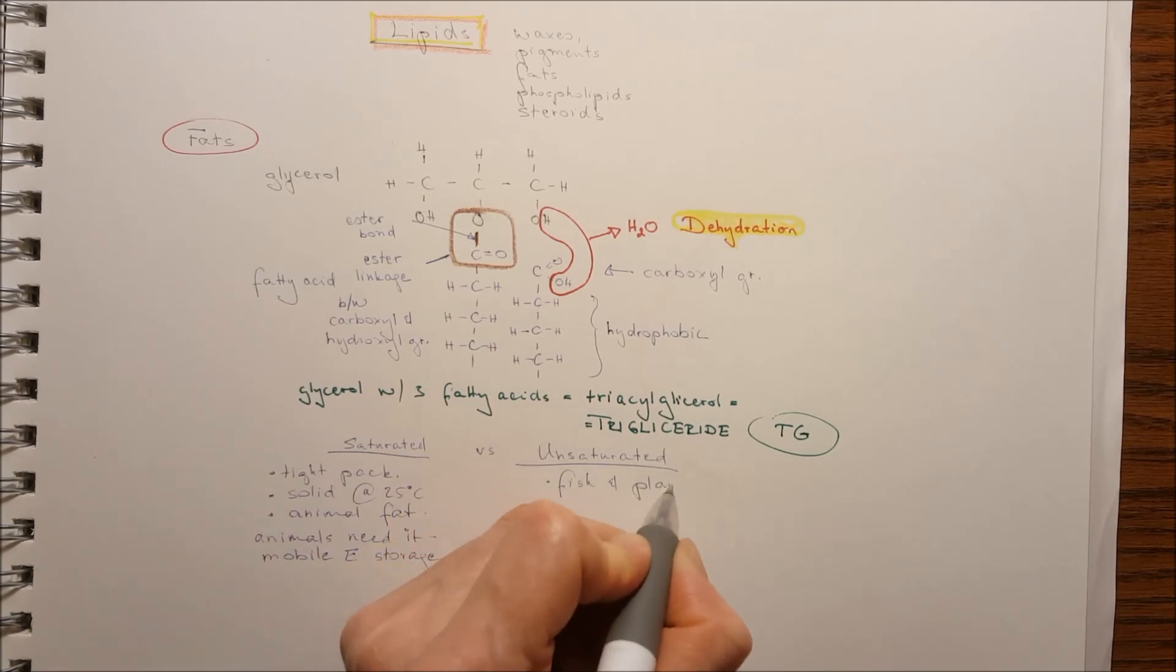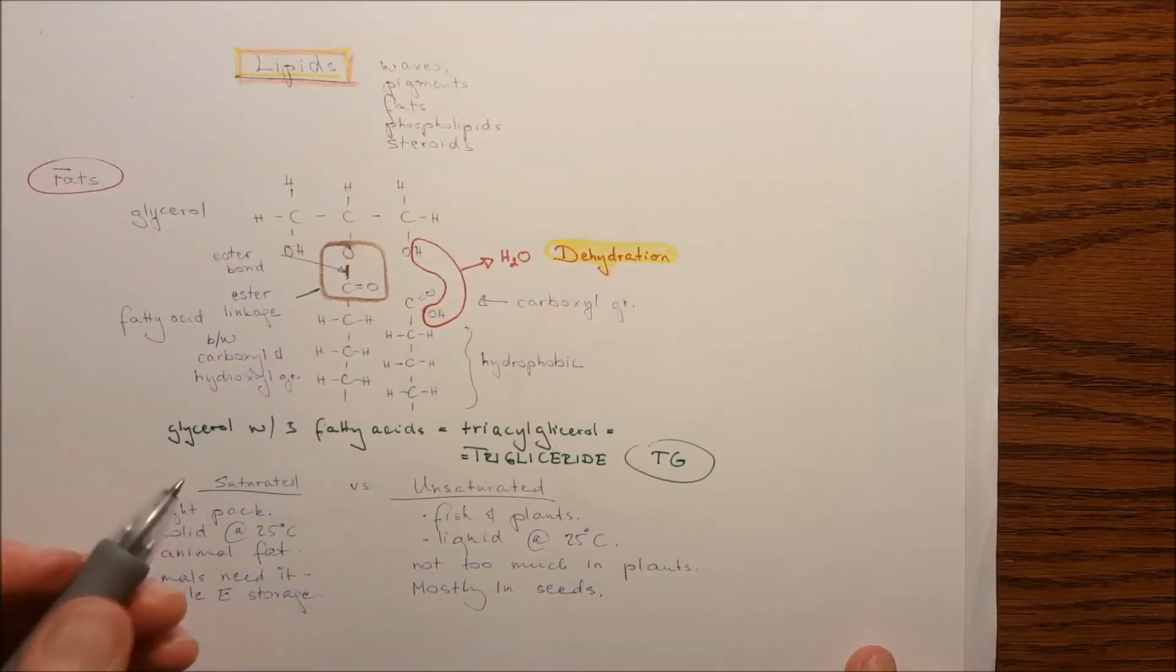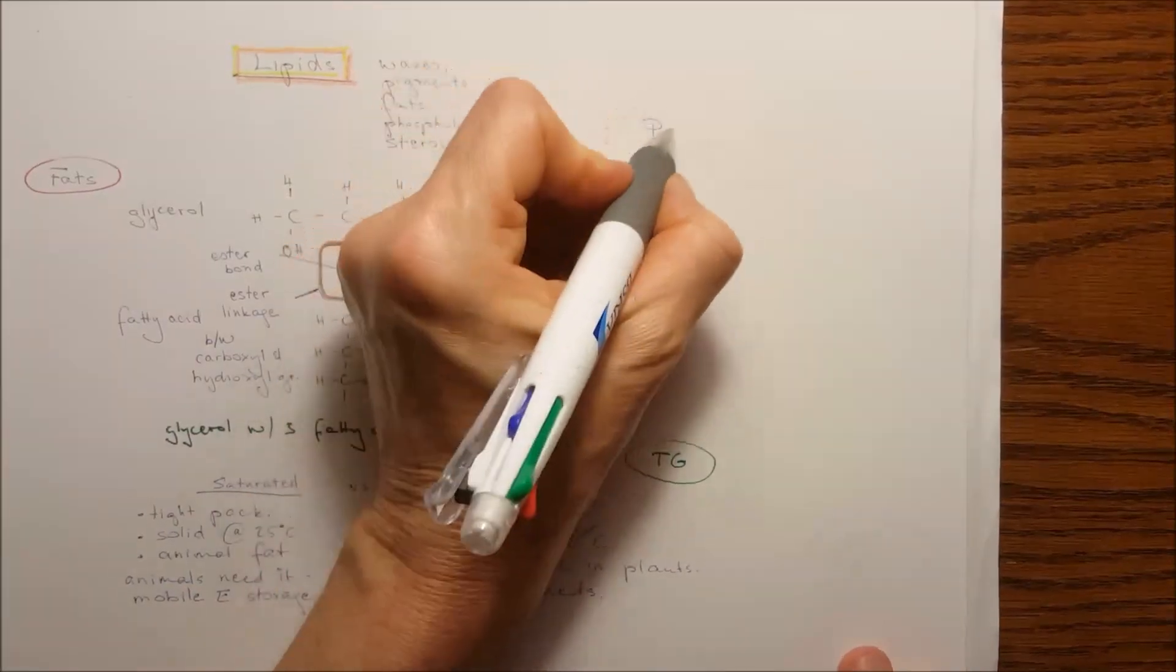On the other hand, the unsaturated happens to be in the fish and plants, contains double bonds. I did not write it down, but you have to know it. Not too much in the plants, but mostly occurring in the seeds as energy source for the embryo for the seed.